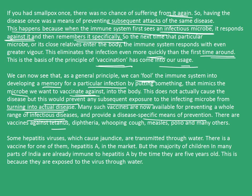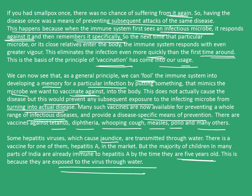There are vaccines against tetanus, diphtheria, whooping cough, measles, polio, and many others. Some hepatitis viruses which cause jaundice are transmitted through water. There is a vaccine for one of them, hepatitis A, in the market. But the majority of children in many parts of India are already immune to hepatitis A by the time they are 5 years old, because they are exposed to the virus through water. Hence, we saw how memory developed inside the immune system helps in preventing a particular kind of disease from happening again.